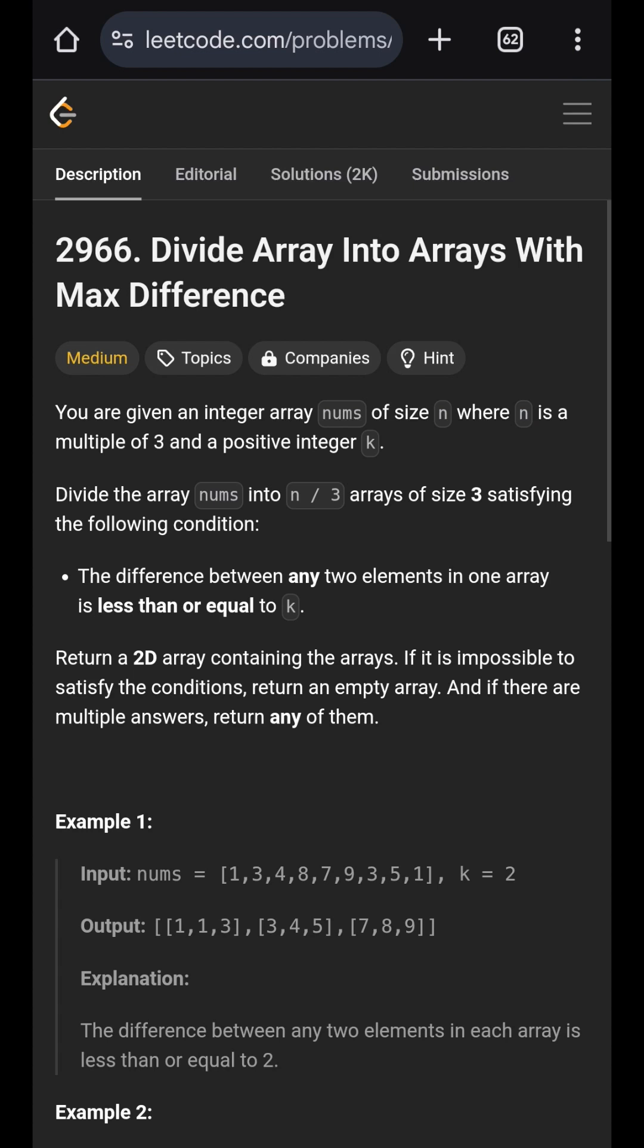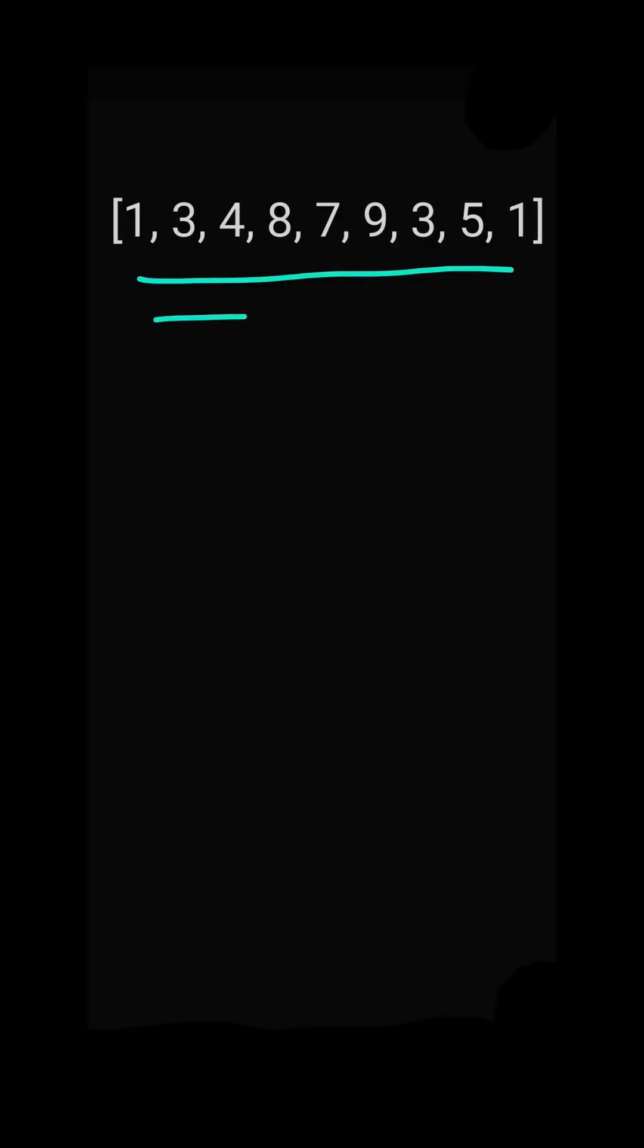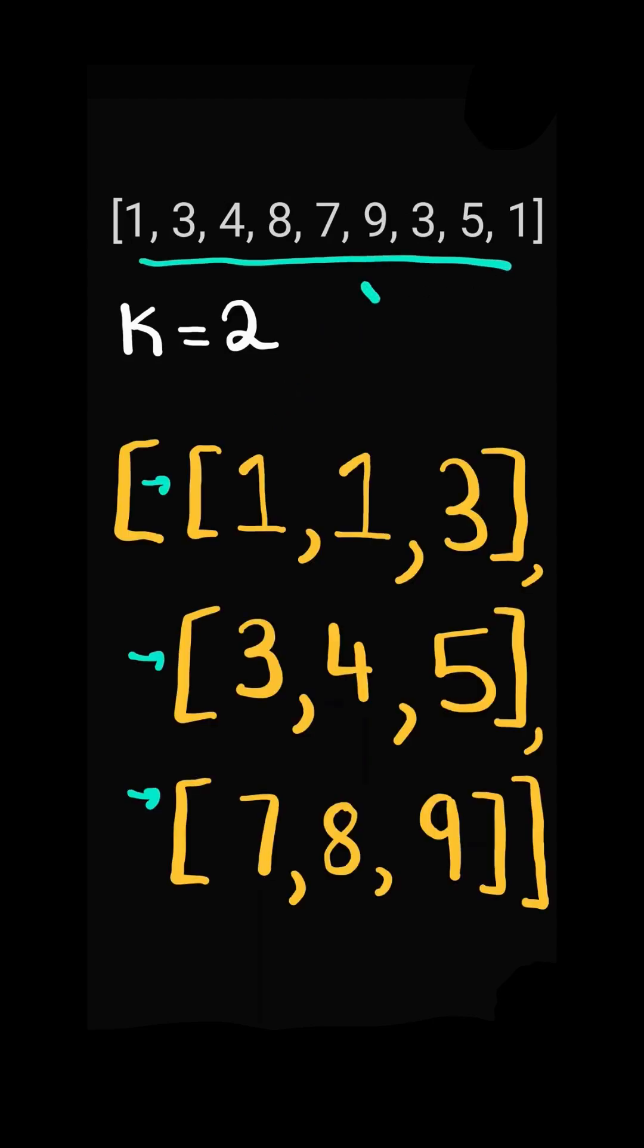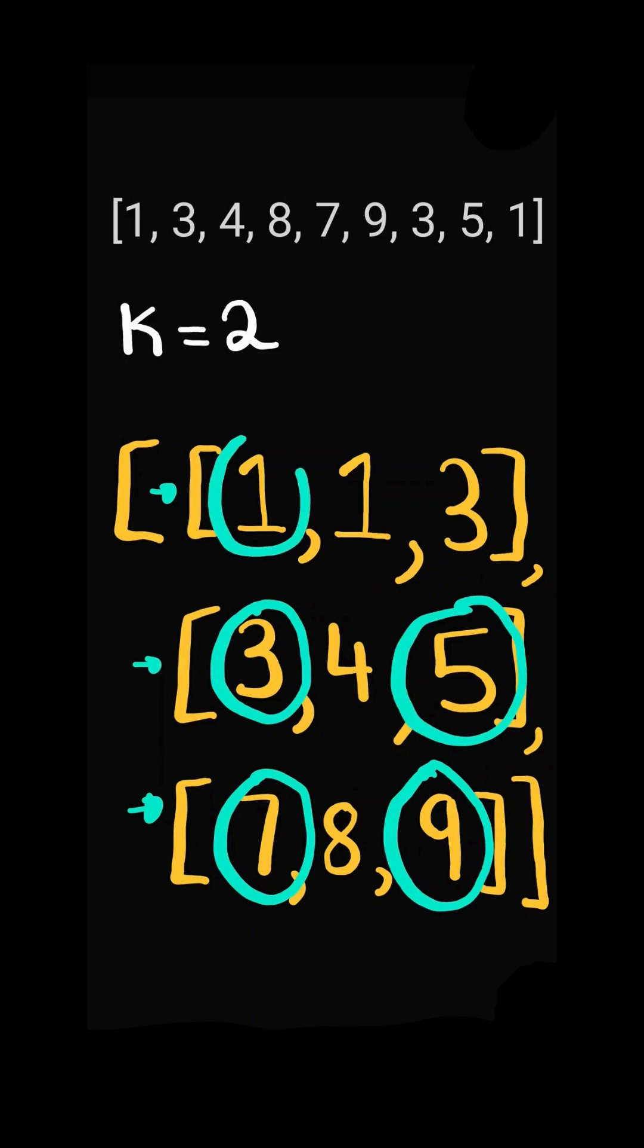Divide array into arrays with max difference. Given a list of numbers and an integer k, divide the array into subarrays of size 3, where the difference between the minimum and maximum of each subarray is less than or equal to k.